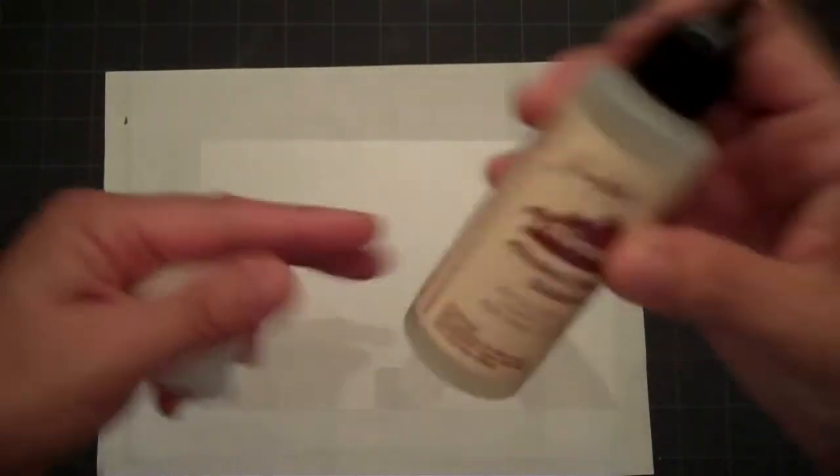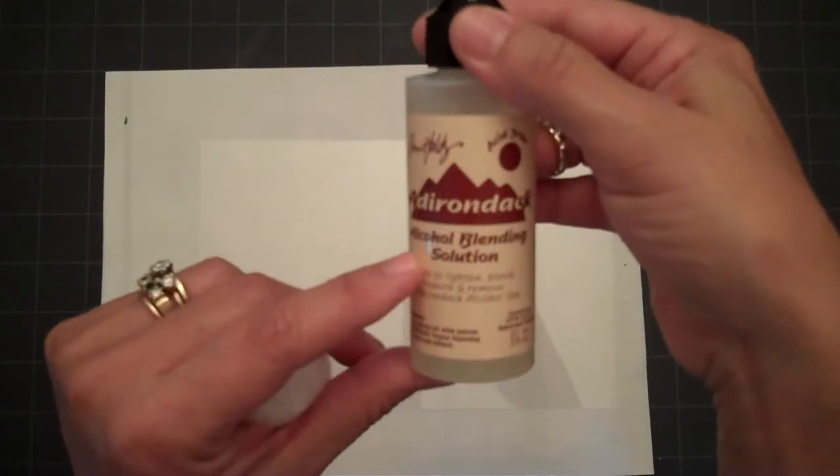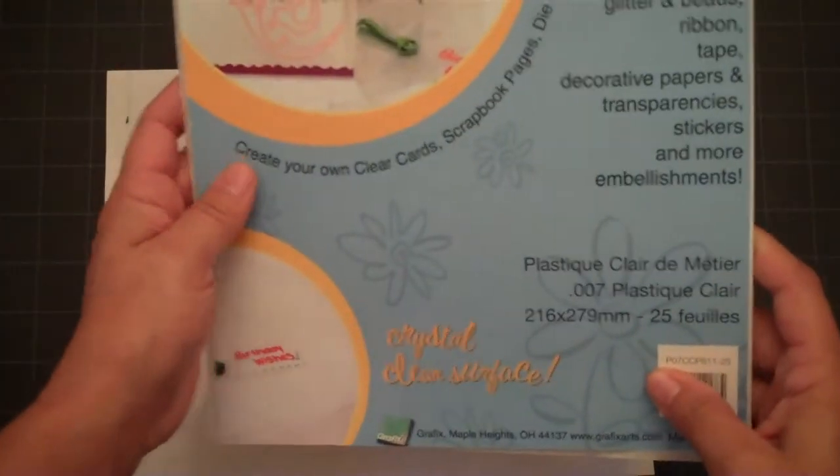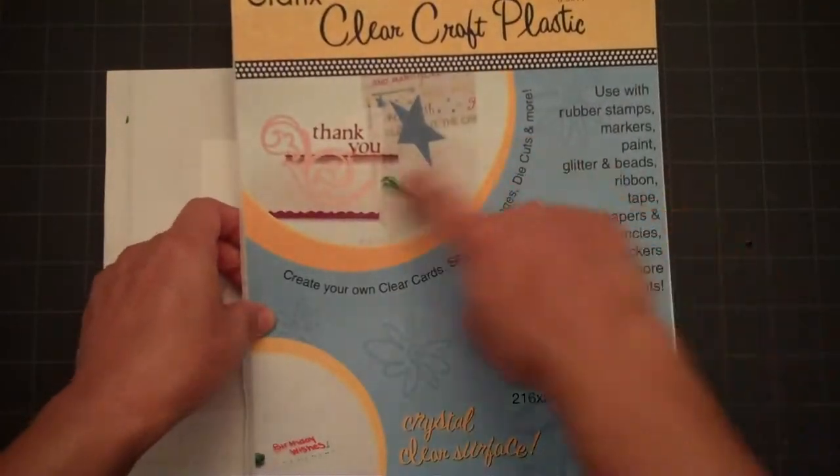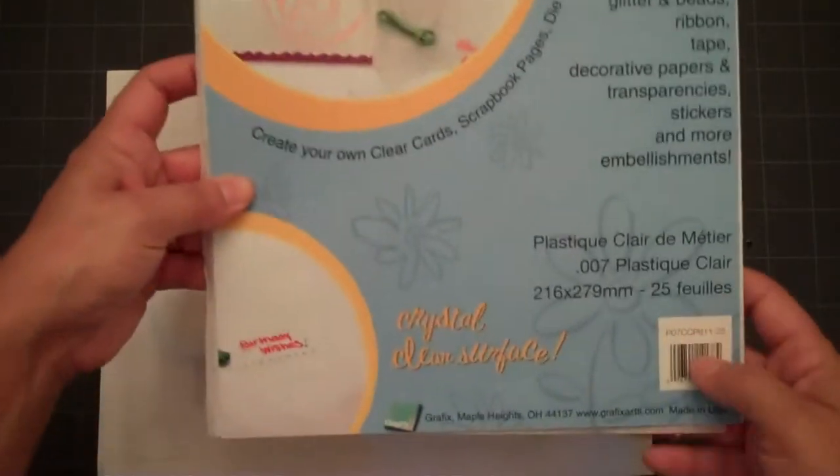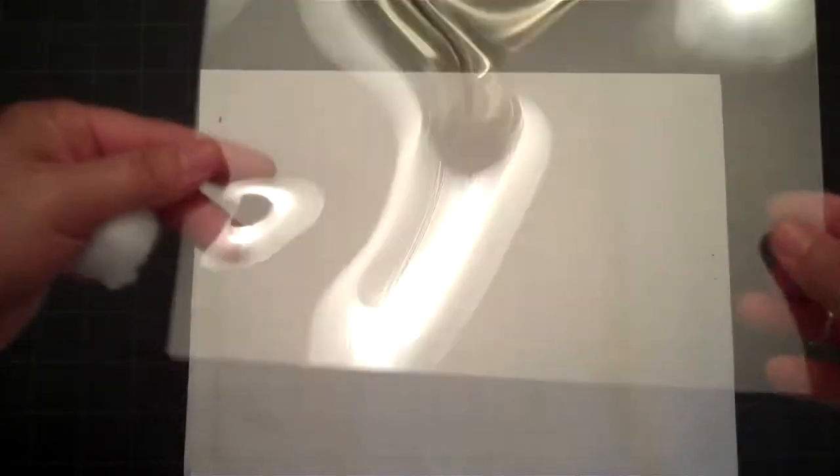So I've got my piece of acetate and a cotton ball, and I'm using this Tim Holtz alcohol blending solution. I do get my acetate or clear craft plastic at Michaels, and it comes in a pack like this. You can cut it down to whatever size you need, but normally I'll cut it in half and use the technique on a piece this size, it's half a sheet.